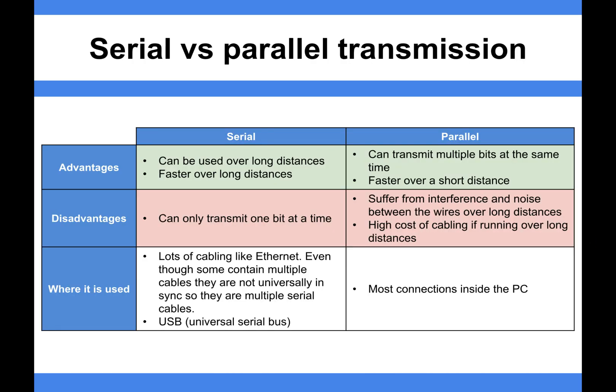A quick comparison: serial's advantage is that it can be used over long distances and is faster over long distances. For example, within your computer you might use a lot of parallel communication, but when data leaves your computer and hits the fiber optic lines, serial is very fast. Adding fiber optic lines in a parallel form would be fantastic, but it would cost a huge amount of money, and there are issues with distance and parallel communication — and it's difficult outside the computer because of the shared clock signal, which we'll talk about in future videos.